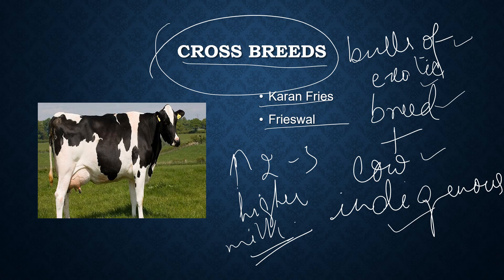So to summarize, there are three types of cow breeds in India: indigenous, exotic, and cross breeds. Cross breeds produce the highest amount of milk and are formed by mating bulls of exotic breeds with cows of indigenous breeds.